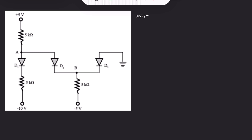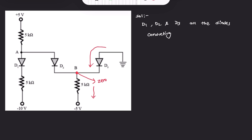For this kind of question we use the trial and error method. Let's assume all diodes D1, D2, and D3 are conducting. If all diodes are conducting, the voltage across each must be zero and there must be some current flowing. The current through the 5 kΩ resistor from the -5V source would be zero minus (-5) over 5 kΩ, which is 1 milliampere. This 1 mA must flow through the 5 kΩ resistor, and D2 must be forward biased under our assumption.